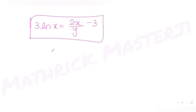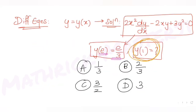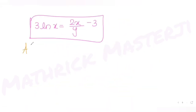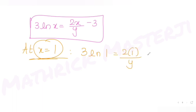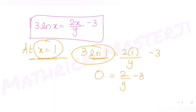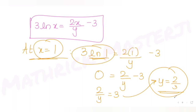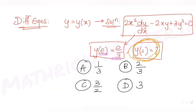The question asks for y at x equals 1. Substituting x equals 1: 3 ln(1) equals 2/y minus 3. Since ln(1) equals 0, we get 0 equals 2/y minus 3, so 2/y equals 3, giving y equals 2/3. The answer is option (b).